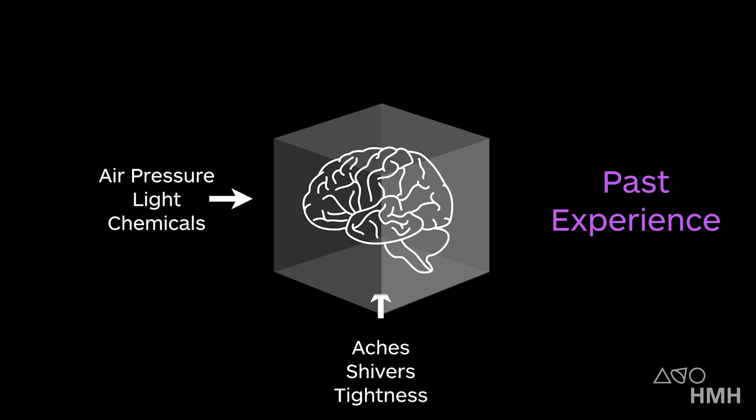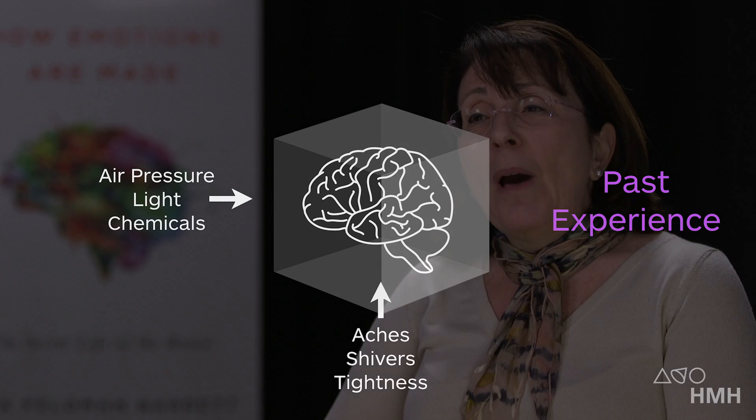If you have a dull ache in your stomach, does it mean that you're hungry? That you're sick? That you're angry? That you're missing someone? Again, your brain is using past experience to guess what caused this situation. So you have an emotion when your brain uses past experience to give your sensations meaning as an emotion. Maybe the last time your stomach ached like this, in a similar situation, you were angry.